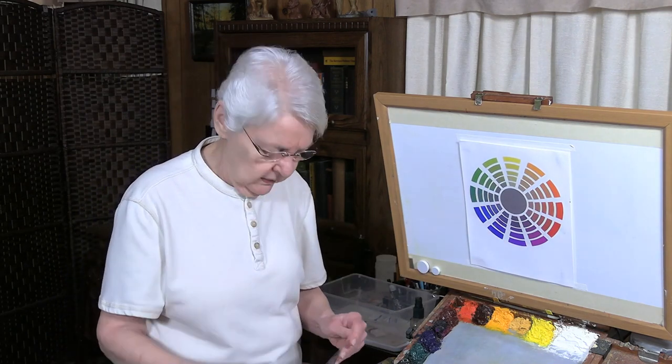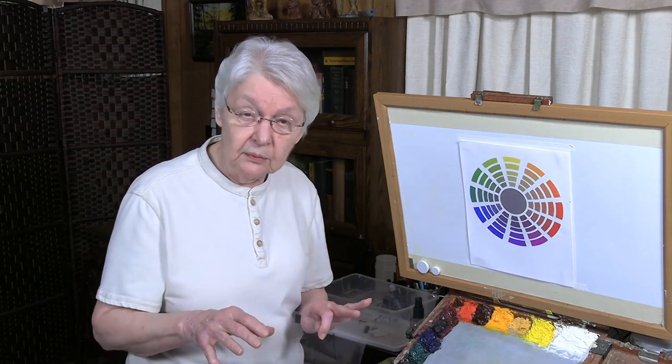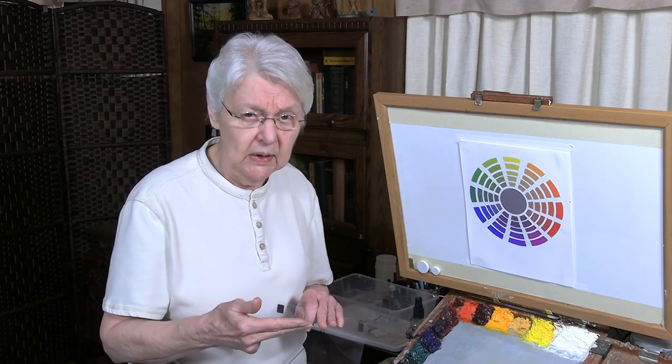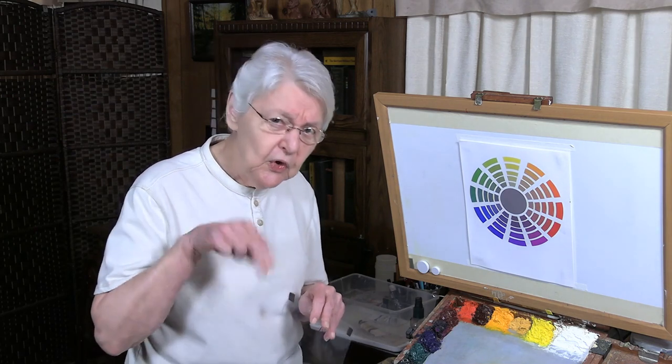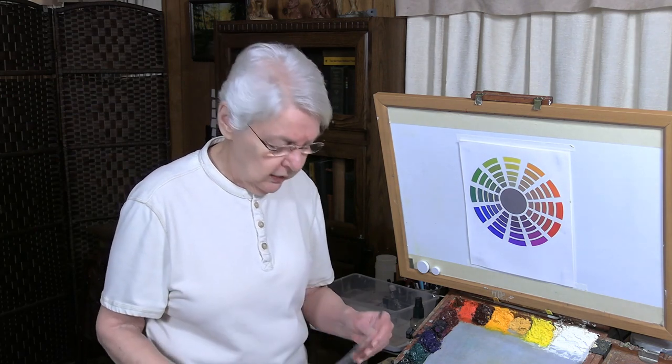I'm going to show you the simplest first. Now one of the simplest color schemes is a triad. It means you choose three colors and those are the three colors you work with. And maybe you're going to add white to lighten. But as far as the hues go, those are the three colors you're going to work with.